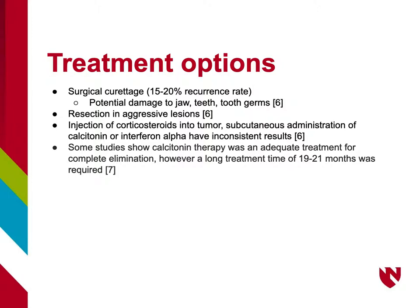Treatment options for Central Giant Cell Granuloma include surgical curettage; however, the recurrence rate for this treatment is 15 to 20% and can result in potential damage to the jaw, teeth, and tooth germs. In situations of aggressive lesions, resection is also a possible treatment option. Other treatment options include injection of corticosteroids directly into the tumor, or subcutaneous administration of calcitonin or interferon alpha, but studies show inconsistent results. Some studies show calcitonin therapy to be adequate for complete elimination; however, a long treatment time of 19 to 21 months is required.